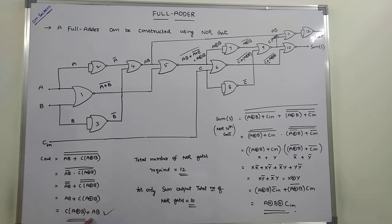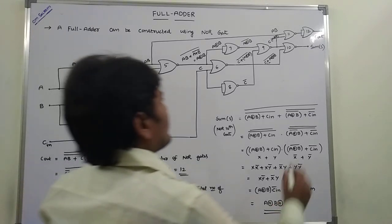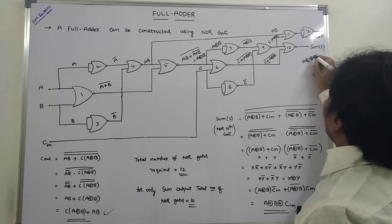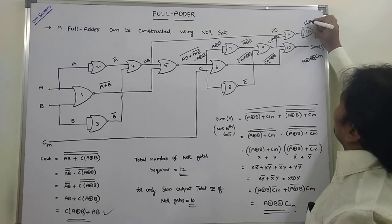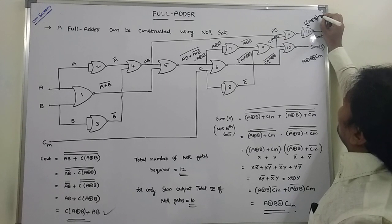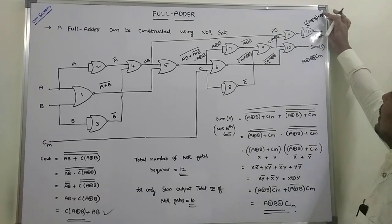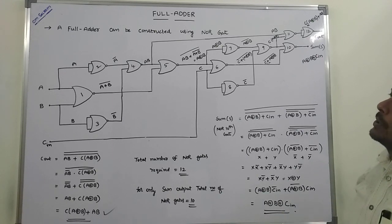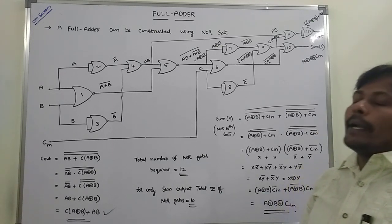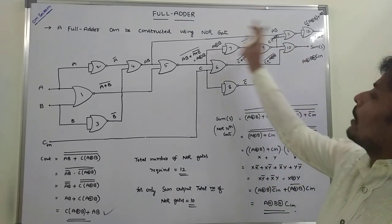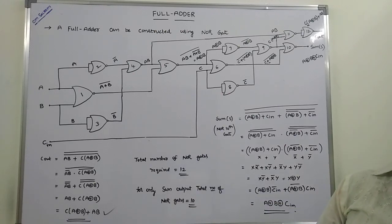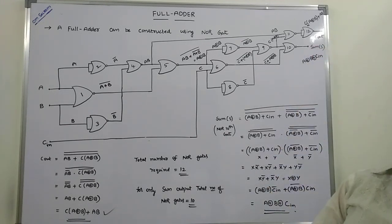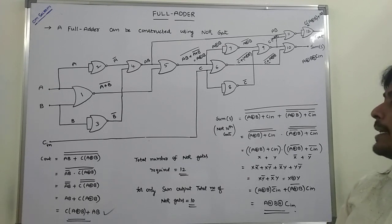C_out = C·(A XOR B) + AB. The sum output is A XOR B XOR C_in, and the carry output is C·(A XOR B) + AB. This is the description of full adder implementation using NAND gates. Total number of NAND gates required to implement the full adder is 12. To get only the sum output of the full adder using NAND gates, 10 NAND gates are required.